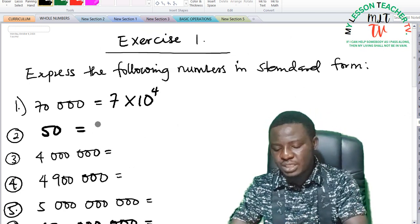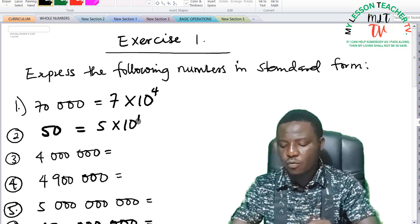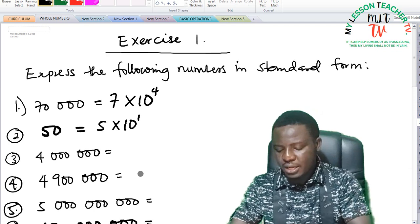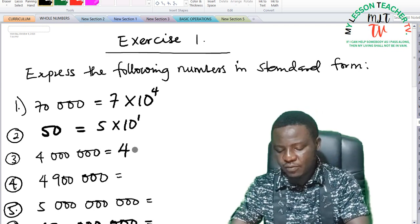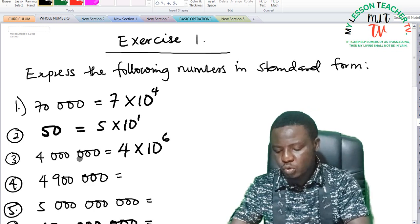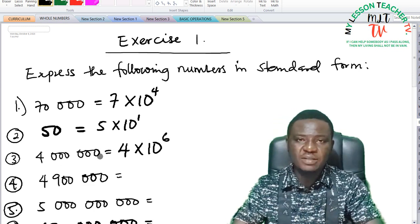50 can be expressed as 5 times 10 raised to the power of 1. While number 3, we have 4,000,000. 4,000,000 can be expressed as 4 times 10 raised to the power of 6 because we have 6 digits after 4.